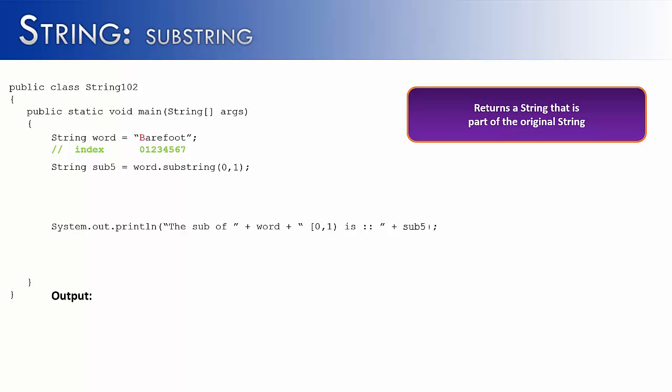Now, what if I wanted to just find one letter, like the B in barefoot? I would look at 0, 1. Never put 0, 0, because remember, this one always has to be one more. If I said 0, 0 or 2, 2, it would print out nothing. So when I run this, I get the sub of barefoot 0, 1 is B. Let's say that I wanted to look for the F in barefoot. You could probably guess what the code's going to be. It's going to be 4, 5. And that, sure enough, is going to give me F.